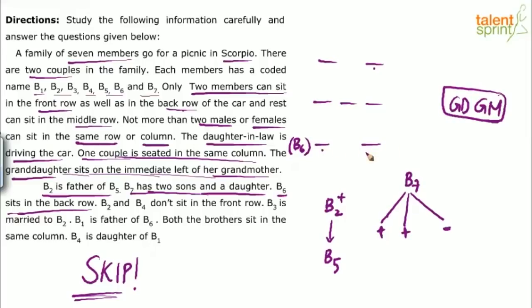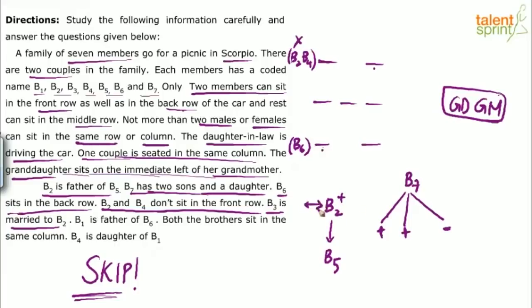B2 and B4 don't sit in the front row — so those two cannot be placed in the front row. B6 will definitely be in the back row. B3 is married to B2, so B3 and B2 form a married couple represented by a double-headed arrow. Since B2 is the father, B3 will be the mother — husband and wife.